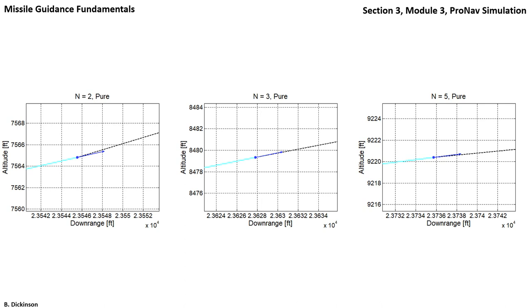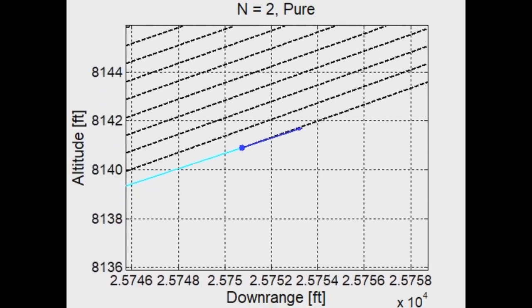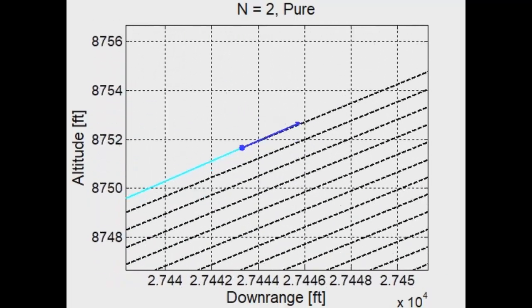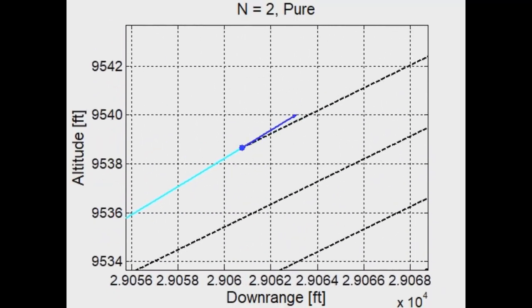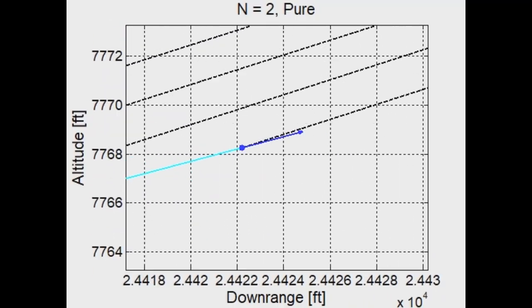Here's pure ProNav for three different values of N just moments before collision. Let's start with the left-hand side, N equals 2. Initially, lead is negative, the distance between the range vectors is continuously changing.